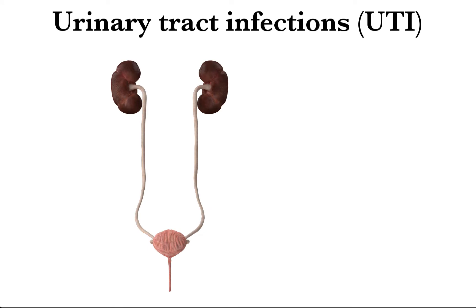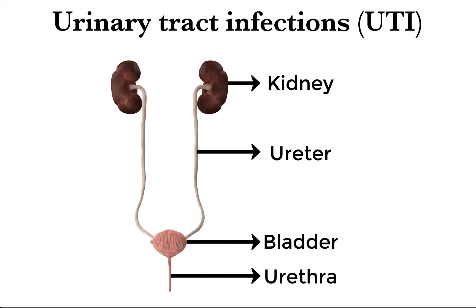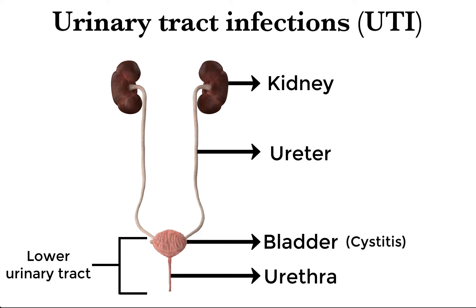A urinary tract infection is an infection in any part of our urinary system that involves the kidneys, ureters, bladder, and urethra. Most infections involve the lower urinary tract — the bladder and the urethra. Infection of the bladder is termed cystitis, and infection of the urethra is termed urethritis. Infections limited to the bladder can be painful and annoying. However, serious consequences can occur if UTI spreads to the kidneys, causing a disease called pyelonephritis.